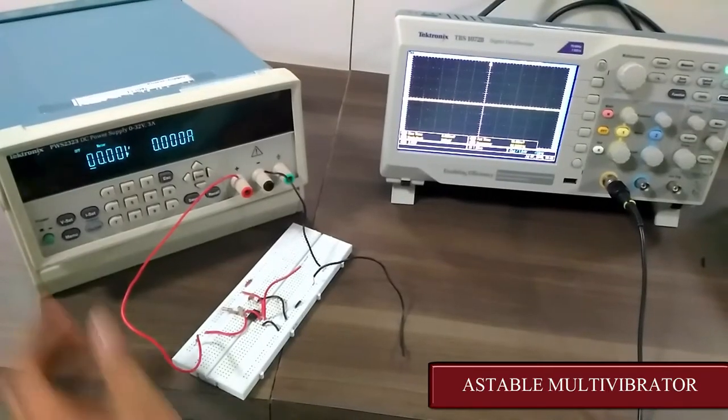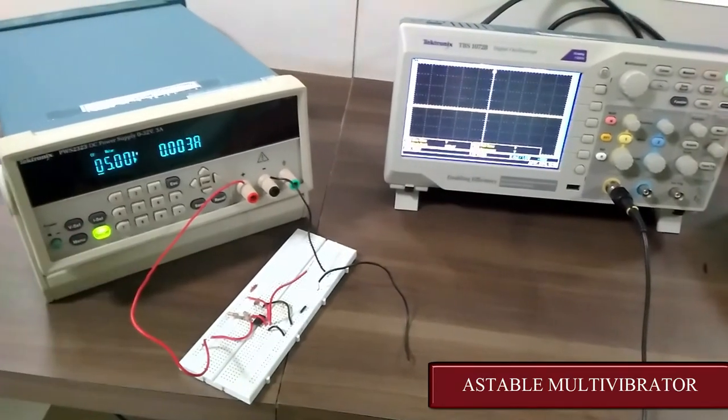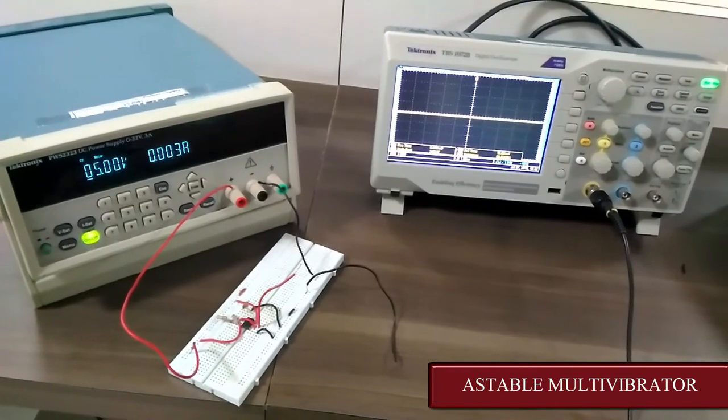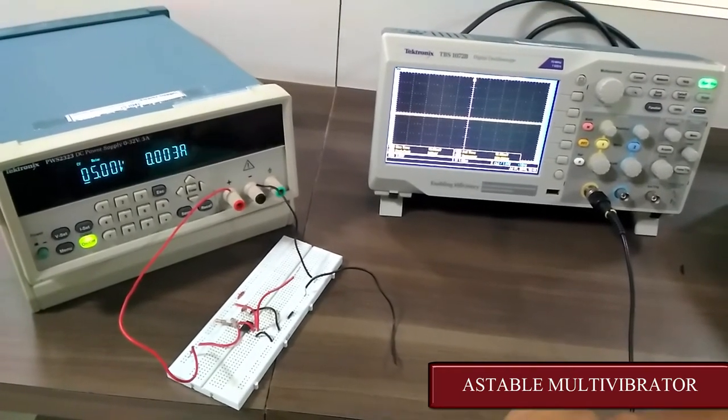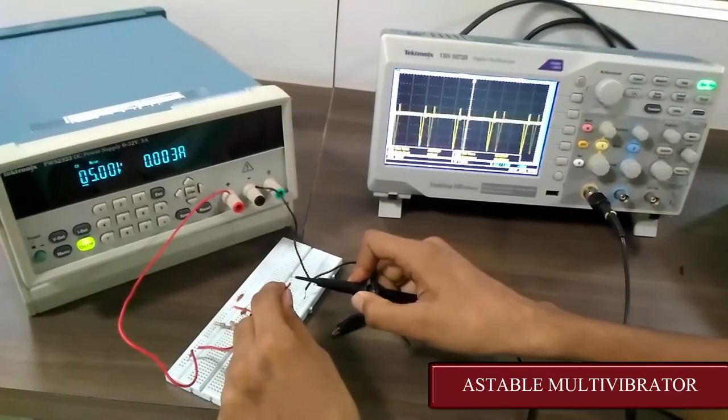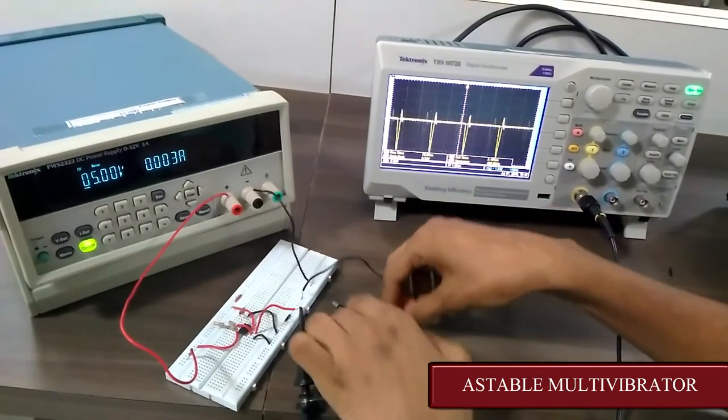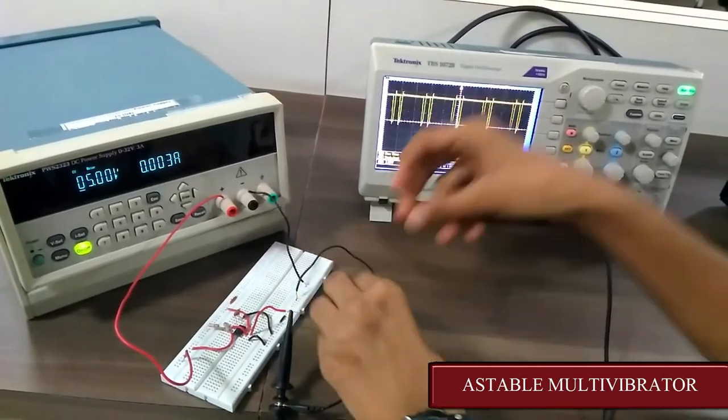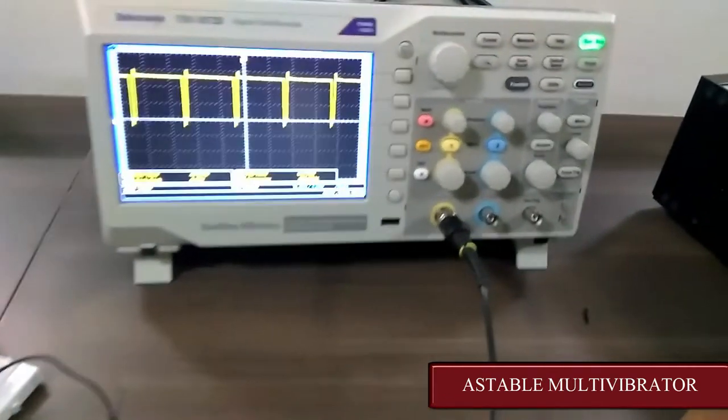Let's give the power supply. Here we have given a power supply of 5 volts. Now connect the first channel of the DSO to get the output. So we connect the first channel. Here we can observe that a square wave is generated.